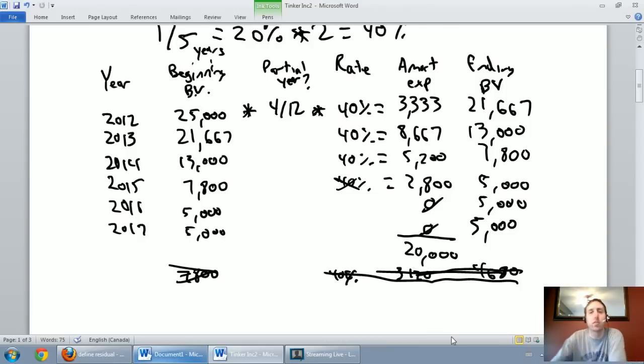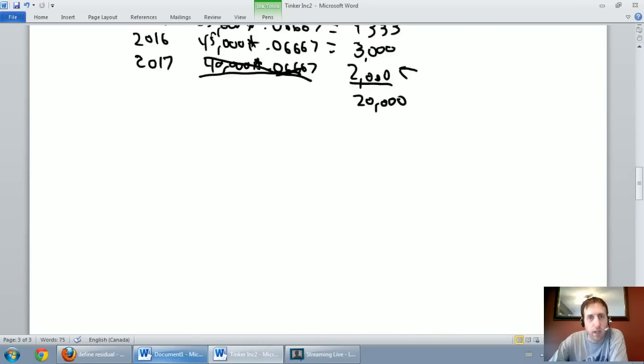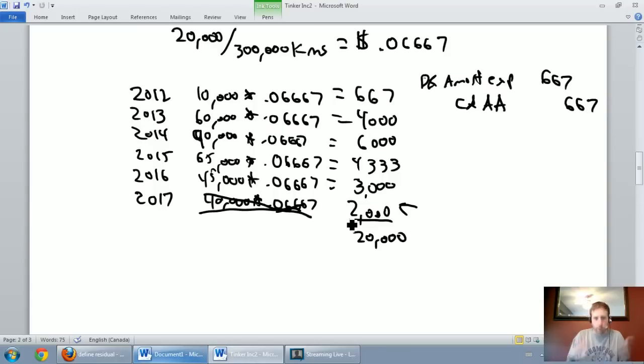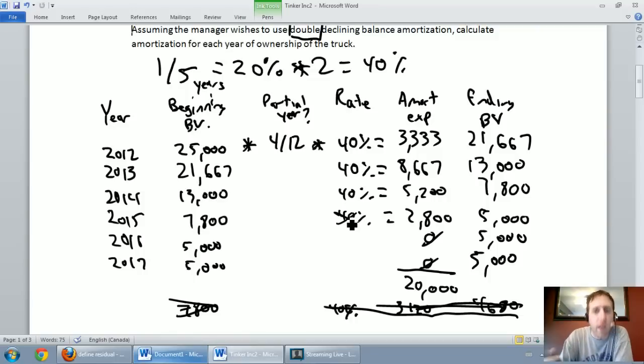Comparing our three methods: straight line has the same amortization every year for each full fiscal year. Units of production varies with our production. If we drive more kilometers, we amortize more. If we drive fewer kilometers, we amortize less. Double declining balance is aggressive amortization. It amortizes your asset quickly. You can see it's a much higher level of amortization in the early years than the other two, and it fully amortizes the asset much more quickly.